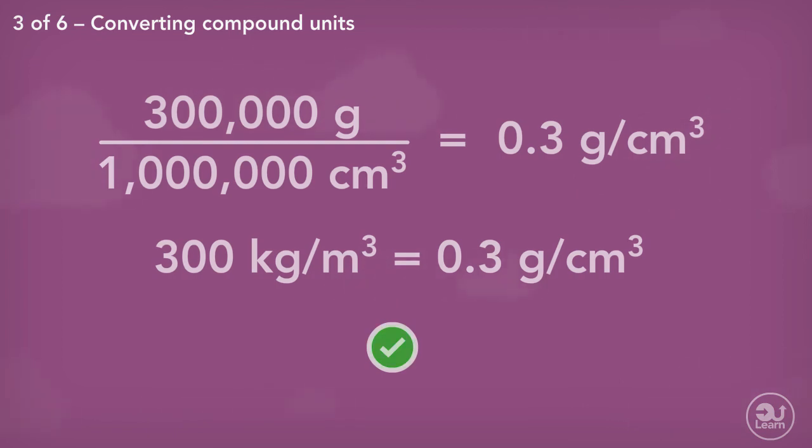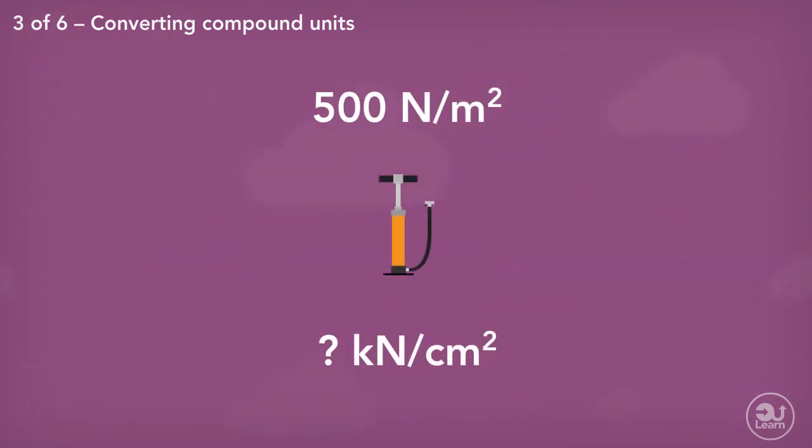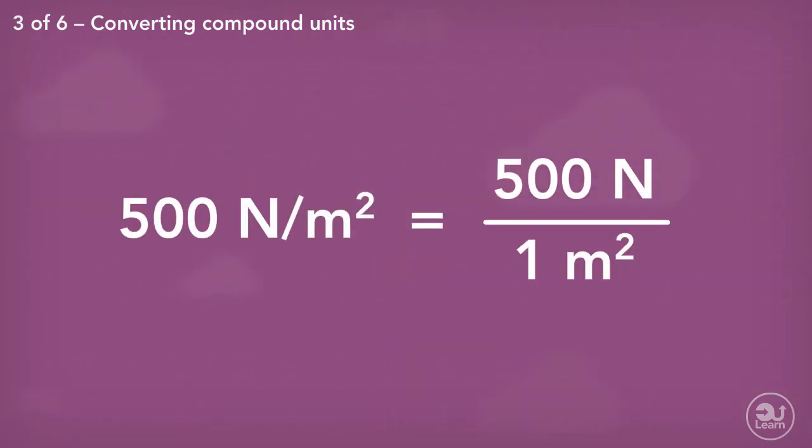How would we convert a pressure of 500 newtons per meter squared to kilonewtons per centimeter squared? Like before, start by changing our value into a fraction. 500 is now represented as 500 over 1. This now shows that there are 500 newtons spread over 1 meter squared.